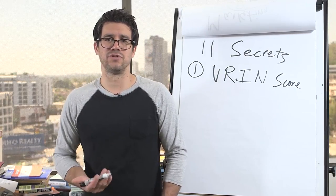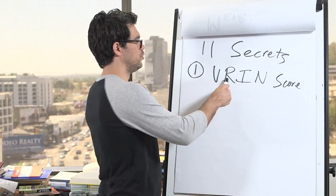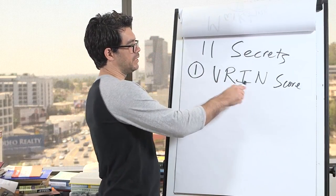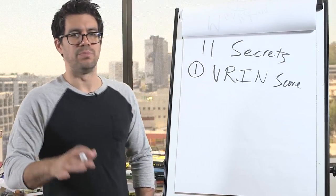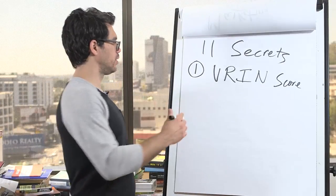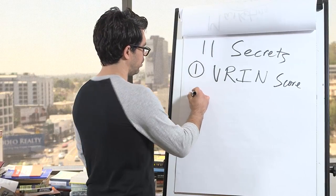You got to know your VRIN score, which is basically value, rare, inimitability, and non-substitution. Now, I don't know if I'm going to explain all those, but I wanted to give you the high level one and then I'll show you how you can learn all of them if you want to know.